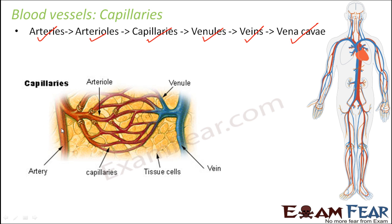Looking at the diagram, the red-colored lines represent arteries which carry oxygenated blood, and the blue lines represent veins which carry deoxygenated blood. Arteries branch out to form arterioles, which branch further into capillaries. On the other side, veins branch out to form venules, which in turn branch out to form capillaries.